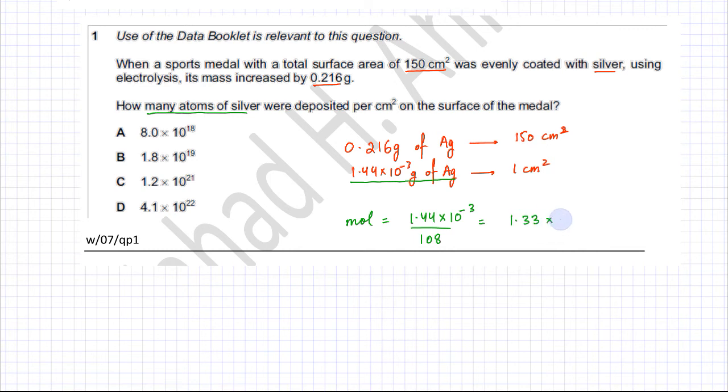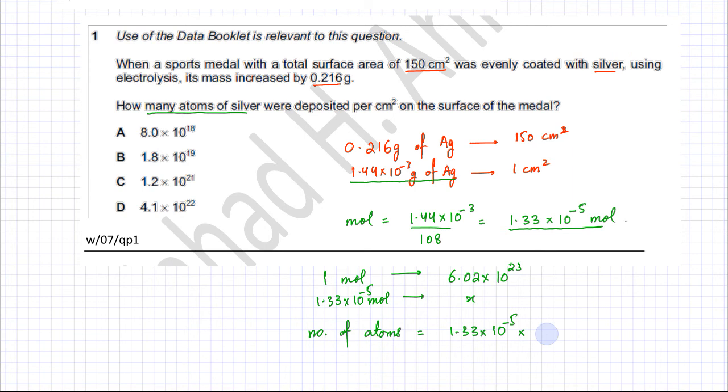Next we need to find the number of atoms. We know that one mole is basically containing 6.02 into 10 raised to power 23 atoms of silver. So if you have 1.33 into 10 raised to power minus 5 moles of silver, then how many particles would that be equal to? The number of atoms according to the ratios is moles multiplied by Avogadro's number, so it's 1.33 times 10 to the power minus 5 multiplied by 6.02 into 10 raised to the power 23.